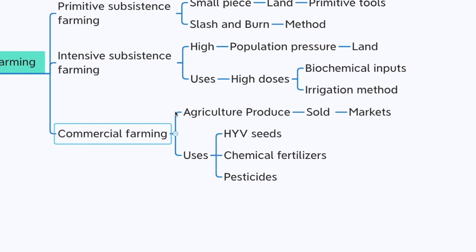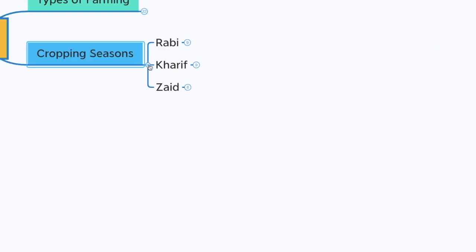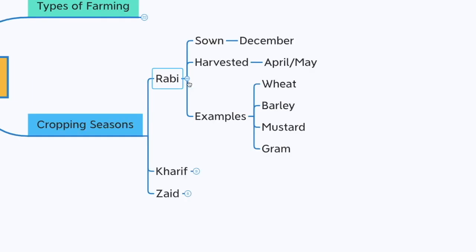Commercial farming uses HYV seeds, chemical fertilizers, and pesticides. Moving forward to cropping seasons — in India we have three cropping seasons: Rabi, Kharif, and Zaid. In the Rabi season, seeds are sown in December and harvested in April or May. Examples include wheat, barley, mustard, and gram.